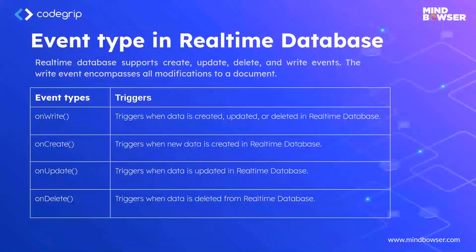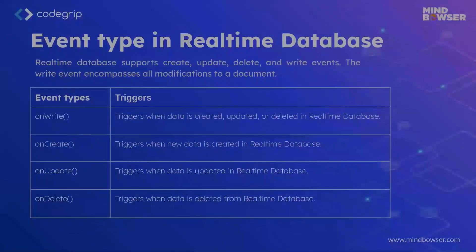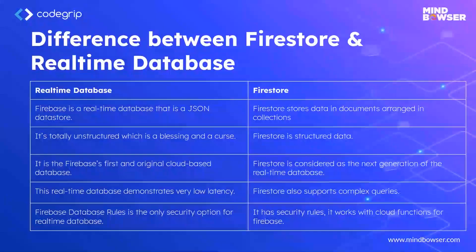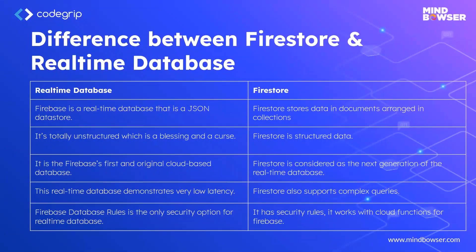A difference between the Firestore and real-time DB. Firebase real-time DB was a JSON data store, and Firestore also is a JSON data store, but it was in a range of formats of a document.